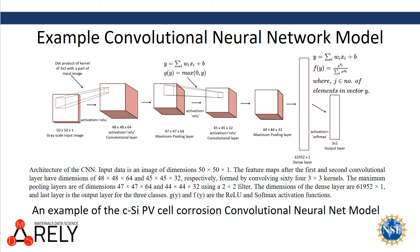Here's an example of a convolutional neural network used for classification. Input images are first standardized for a specific size. Then convolutional layers are used to create feature maps of the input images. Pooling layers reduce the dimensionality of the feature maps so that the original images can be classified into categories.